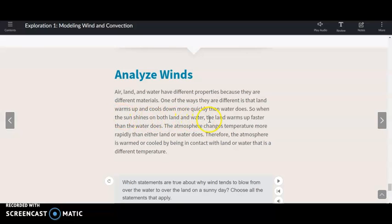So when the sun shines on both land and water, the land warms up faster than the water does. That is important. If you've ever run out on a beach in like mid-morning, you might have noticed the sand's really hot. But the water is not yet because the water takes longer to warm up. The atmosphere changes temperature more rapidly than either land or water does. This is important because the air, the atmosphere, it's right above the water and it's right above the land.